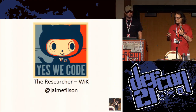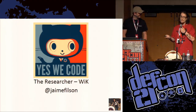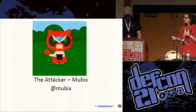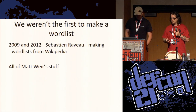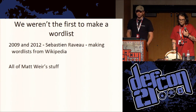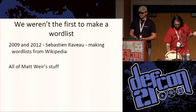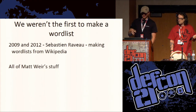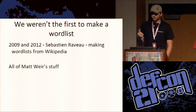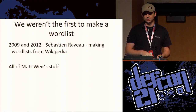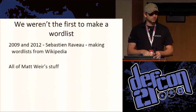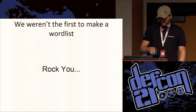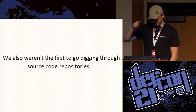I did most of the research. So we're not the first ones to make word lists. In 2009 and 2012, Sebastian Riv made word lists from Wikipedia — he's an awesome guy. Also all of Matt Weir's stuff — if you haven't used Matt Weir's keyboard dictionary, it's one of the best ones to find people who just used common patterns. And there are other people who make awesome word lists.